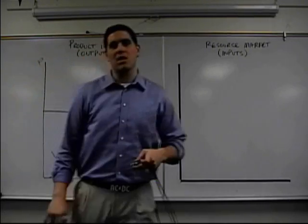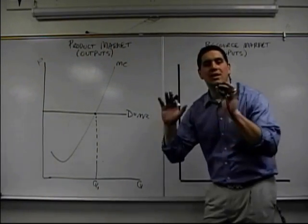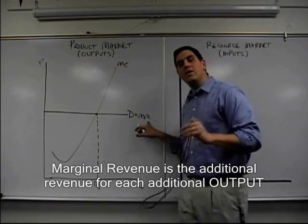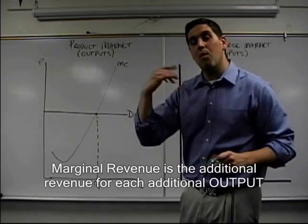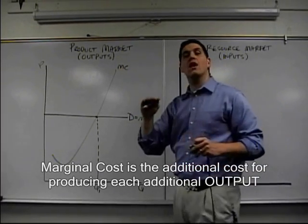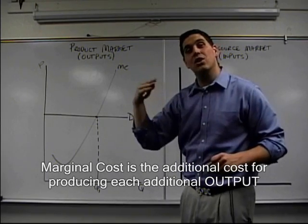I'm not going to put an ATC, but that's the concept. If that makes sense to you, make sure you get the idea. Marginal revenue is the additional revenue for each additional output. Marginal cost is the additional cost of one more output, an additional apple.